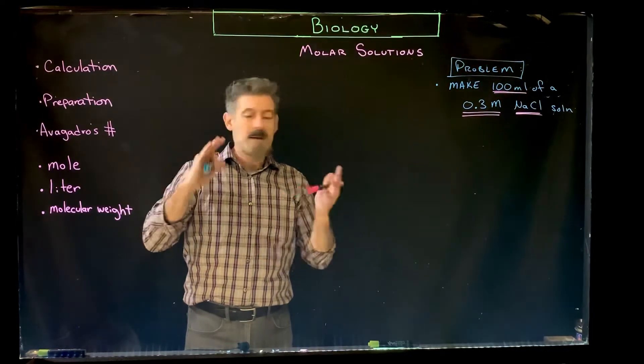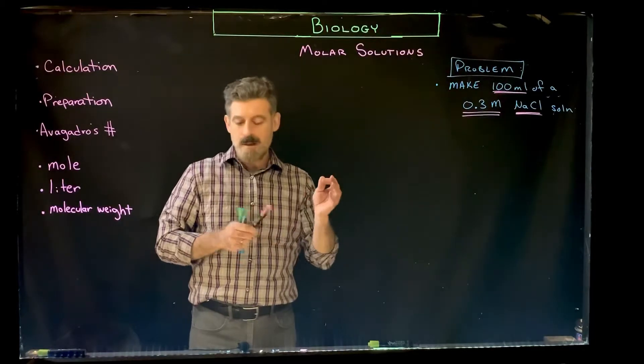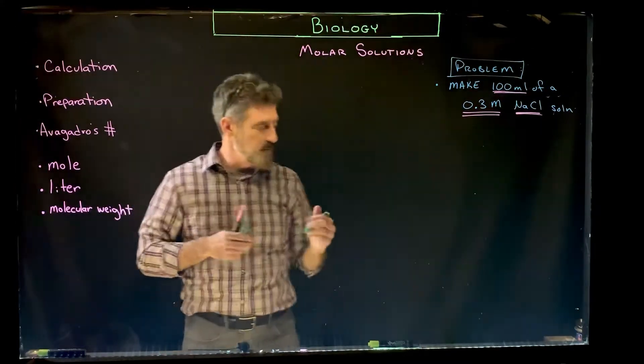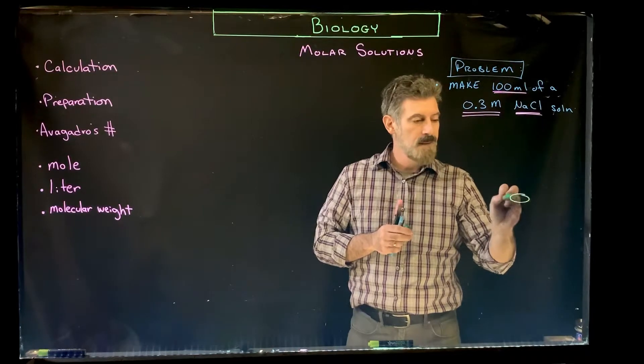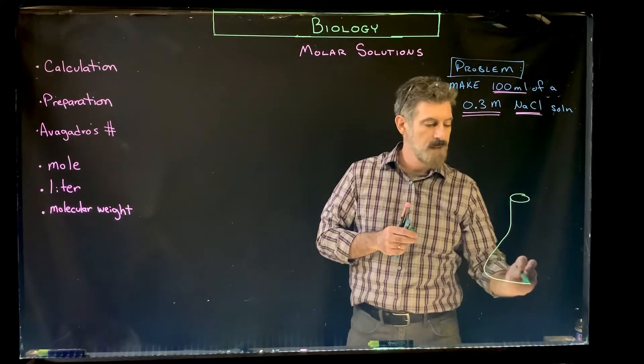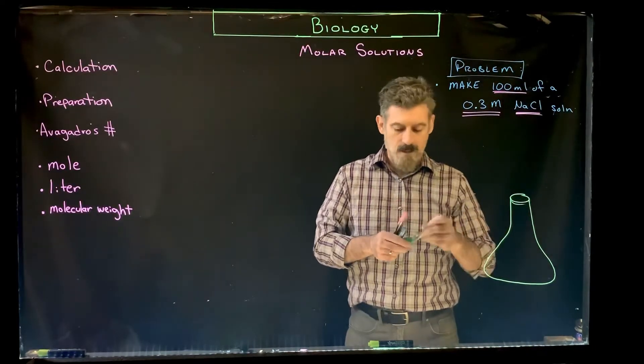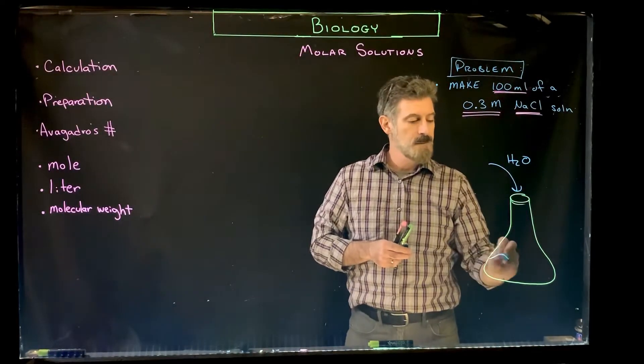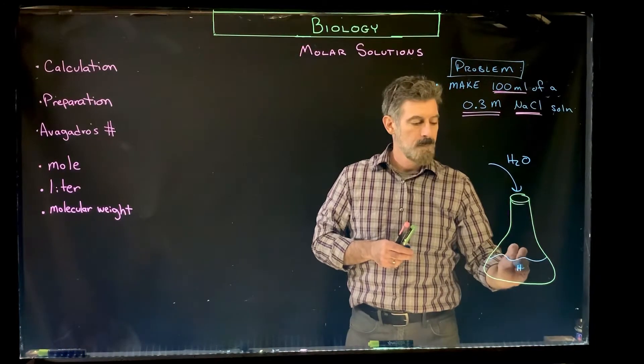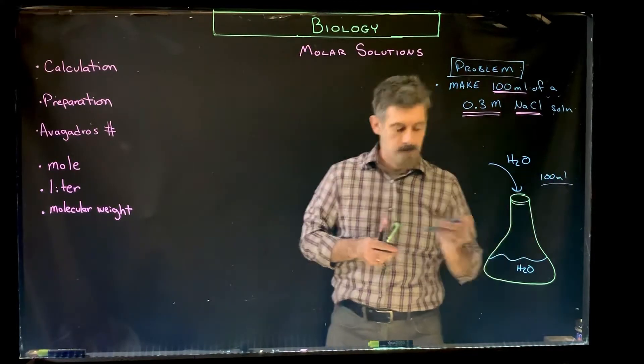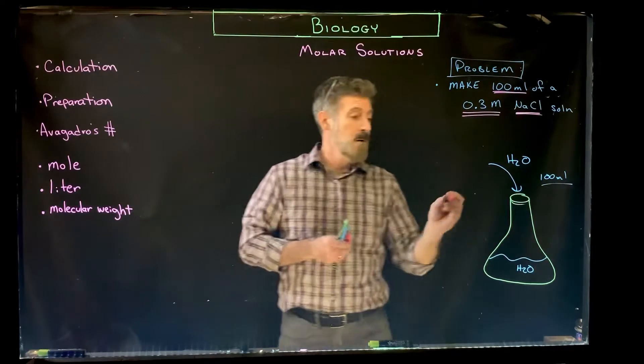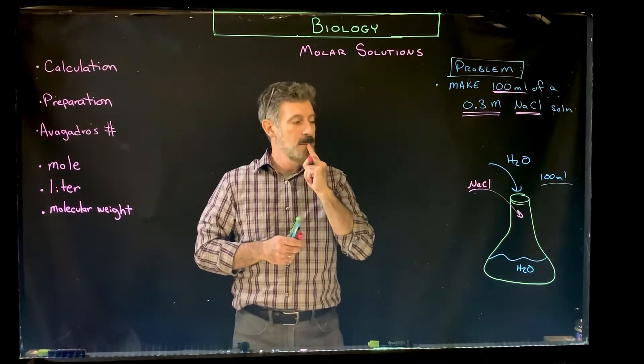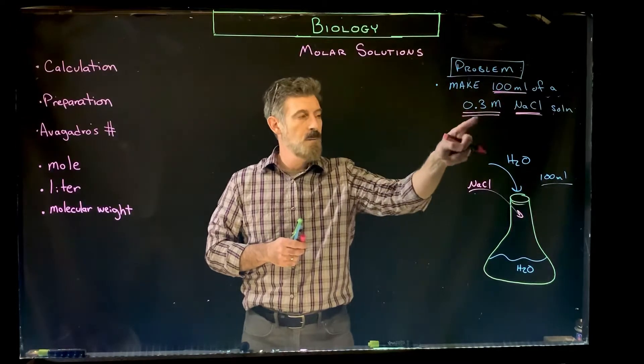So the preparation part and the background. What you'll really need to know is an equation. From the practical standpoint, what are you going to do? You're going to have an Erlenmeyer flask like this. Into this flask, you're going to put water. In this case, it's going to be 100 milliliters of water. And then you're going to need to add to that water sodium chloride. But now the question is how much?